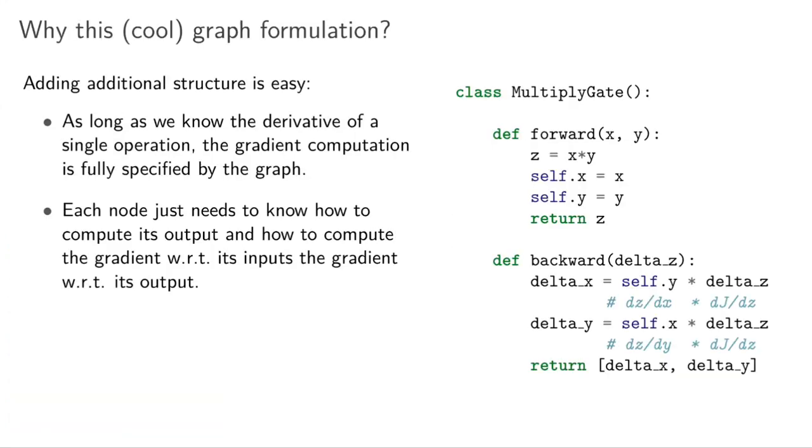One reason for this is that it's really easy to add additional structure. As long as we know the derivative of our operation, one of those blocks or the nodes in the graph, then the gradient computation is fully specified in the graph. You can move forward, you can push data through the graph, but you can also get gradients by going backwards through the graph.